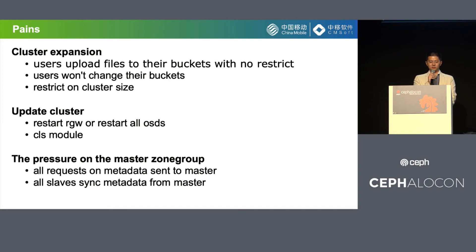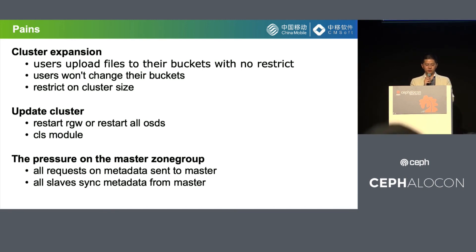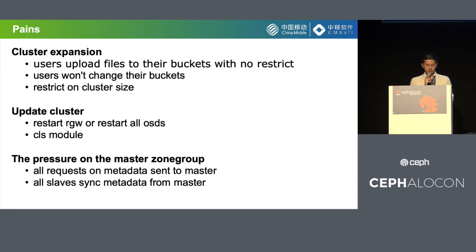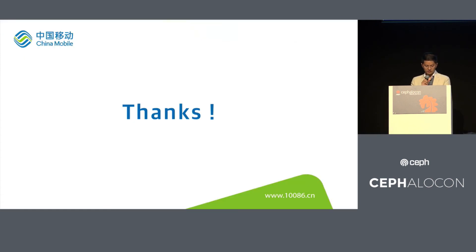The last challenge is the pressure on the master zone group. This has occurred in our production environment — we can see over 10,000 concurrent requests on the master zone group, which makes RGW very slow and causes high latency for metadata modifications.